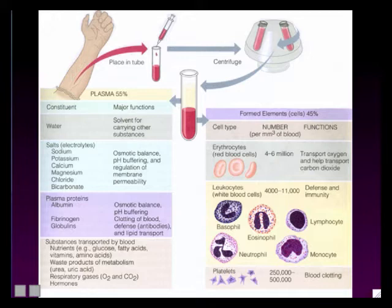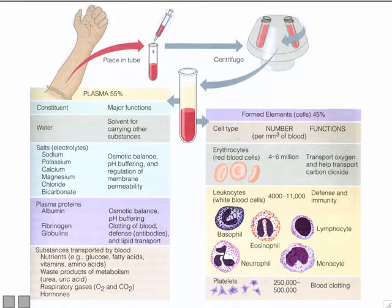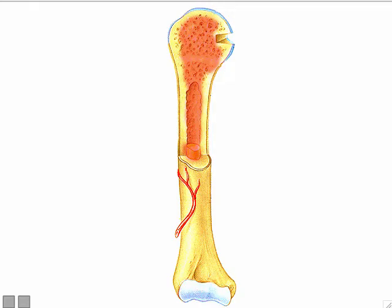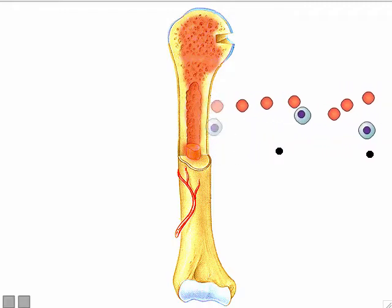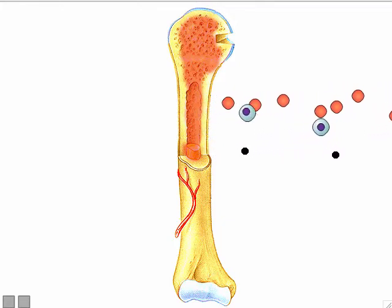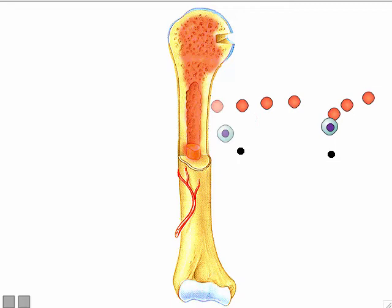Red blood cells have a very short lifespan — only three or four months — so the body constantly makes new ones. Blood cells are formed inside your bones. To be more specific, inside your bones is a tissue called red marrow. The red marrow is the factory that makes not just red blood cells, but all of your blood cell types: red blood cells, white blood cells, and platelets.